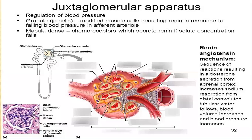Macula densa cells are basically chemoreceptors. When the filtrate passes through, they can monitor the amount of chemicals, and if needed, they can stimulate cells accordingly. This is the juxtaglomerular apparatus. The renin-angiotensin system is also maintained here, and it is very important for blood pressure regulation.